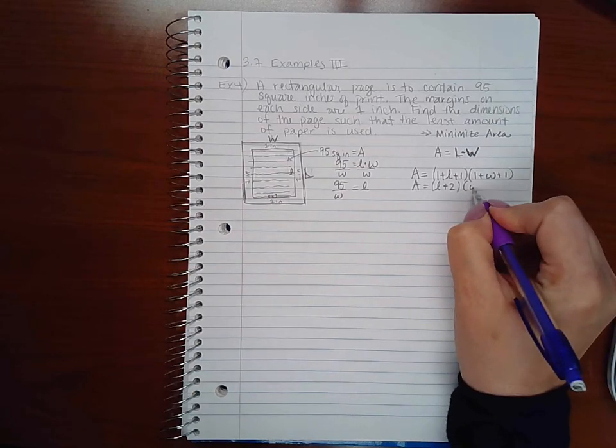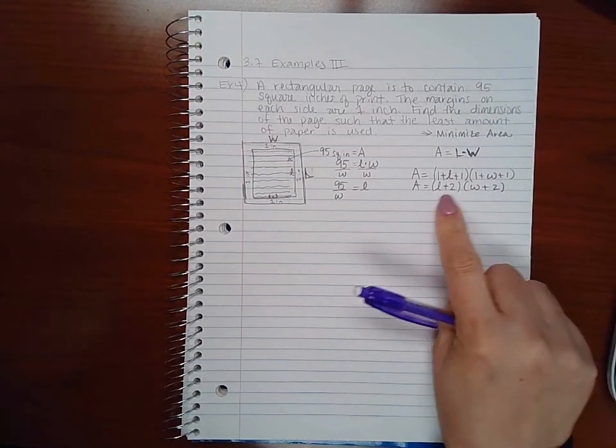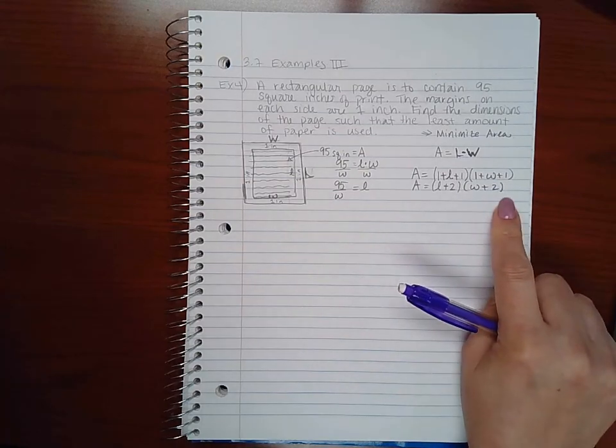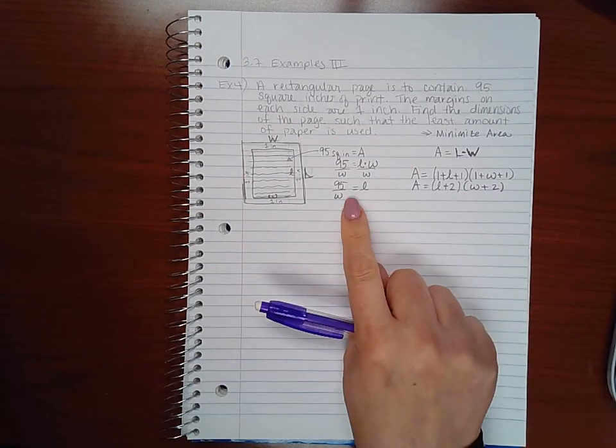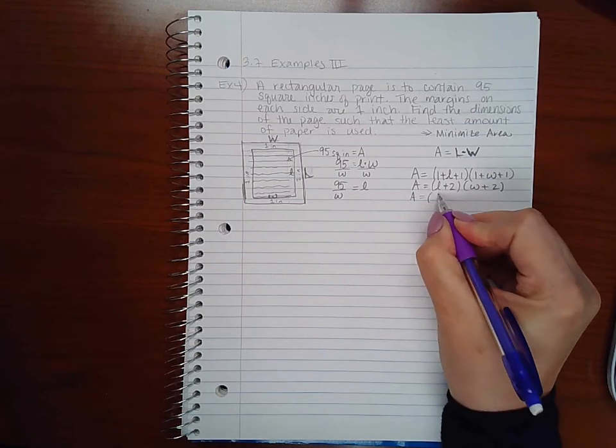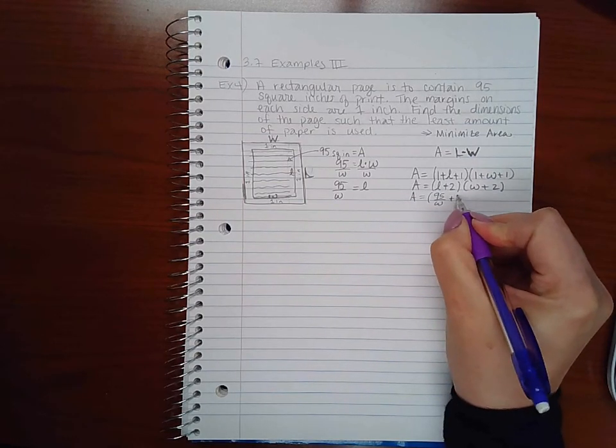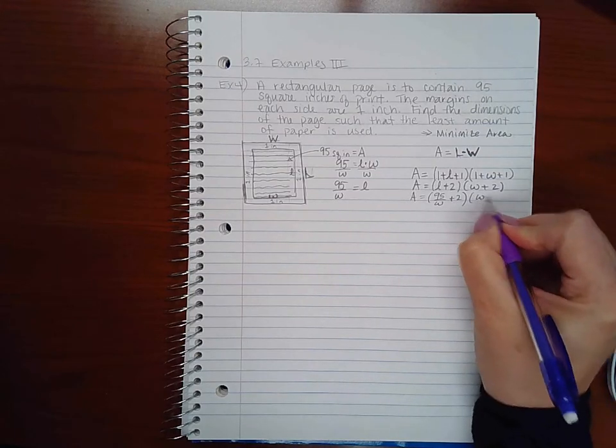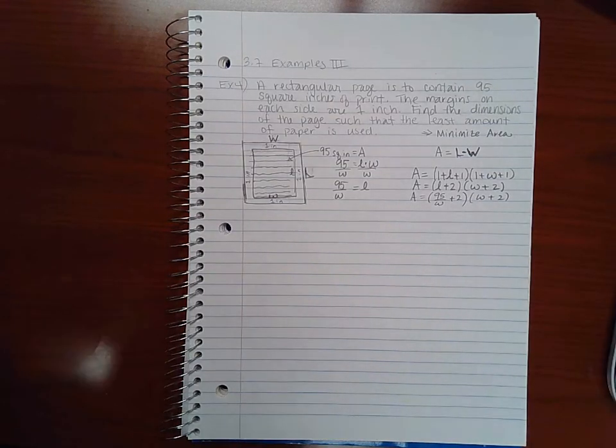Capital W is this width here which consists of one inch, little w, and another inch, which means little w plus two. And we can get this into a single variable by using this information here. So A equals 95 over little w plus two, and little w plus two is still there.